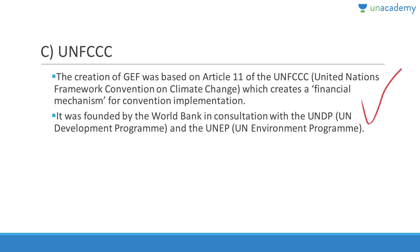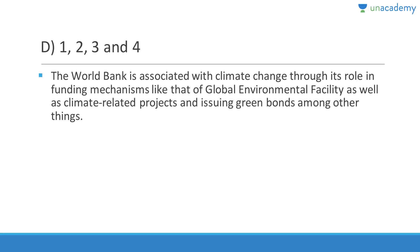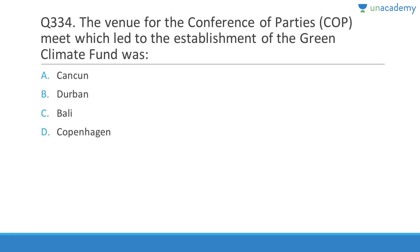Question 333: Organizations associated with climate change include IUCN, Conservation International, World Bank, and the Intergovernmental Oceanographic Commission (IOC). Answer is D (1,2,3,4). The World Bank is associated with climate change through its role in funding mechanisms like GEF and climate-related projects, issuing green bonds, among other things.